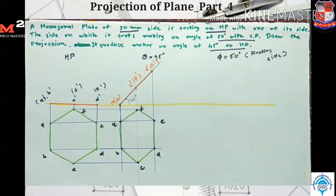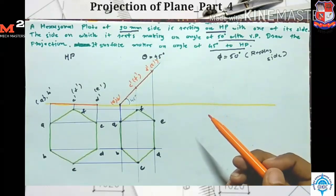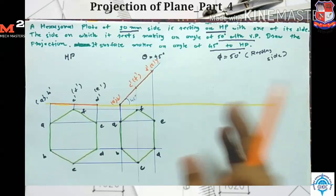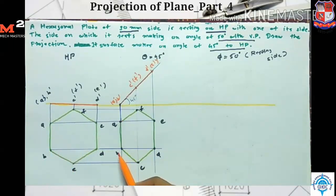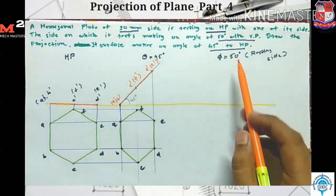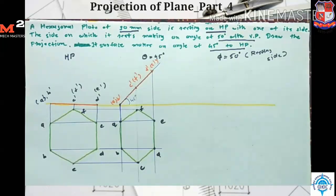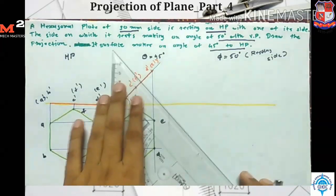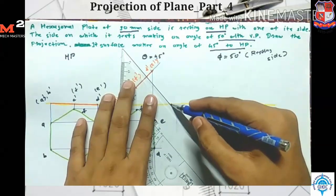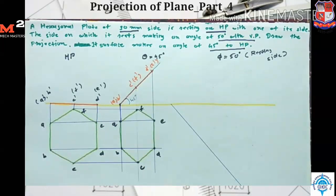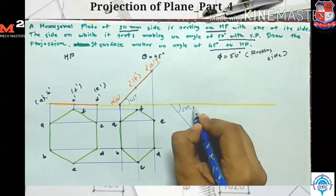Let's draw the third stage. The side on which the plane is resting makes an angle of 50 degrees with the vertical plane. This angle is made with the vertical plane, so we represent this on the horizontal plane. Before drawing the third stage, we first check that the length of side AB is constant in both stages. Here AB is 30 mm, and here AB is 30 mm — its length is constant. So we are not required to find the apparent angle; we directly draw the line at 50 degrees. Phi is equal to 50 degrees.